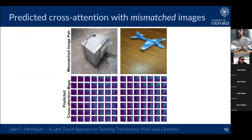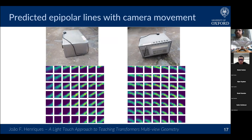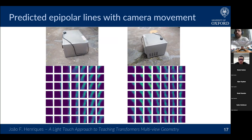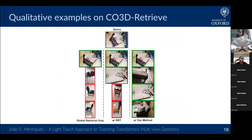Here's what the attention maps look like for a negative pair — the two images don't match, and the attention maps are predictably low value or diffuse. There's also a video showing the predicted attention maps following the epipolar lines and moving around in real time as you rotate around an object.